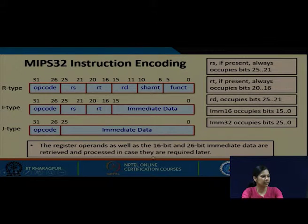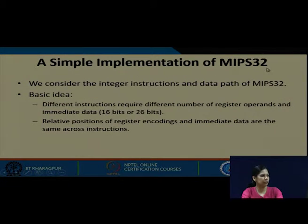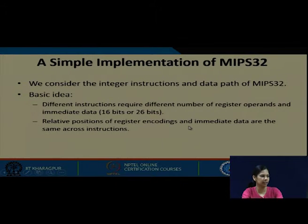In a simple MIPS implementation, we consider the integer instructions and data path of MIPS. The key idea is that different instructions require different numbers of register operands and immediate data, but the relative positions of register encoding and immediate data are the same across all instructions. This means that regardless of instruction type — J-type or I-type — the fixed bit positions are always known to us.